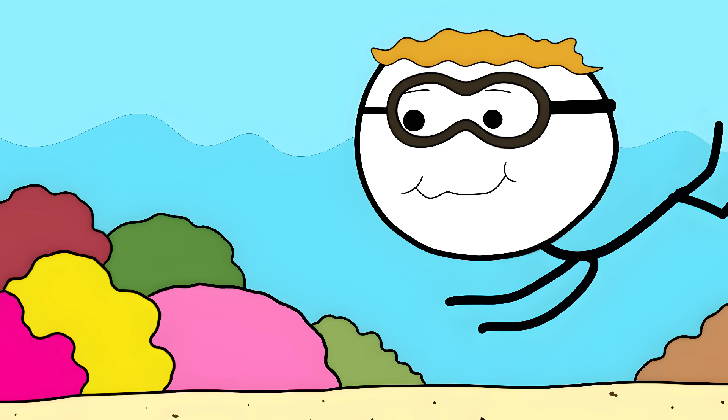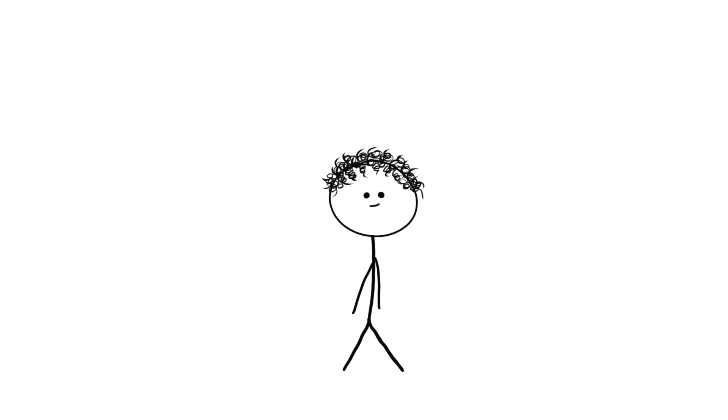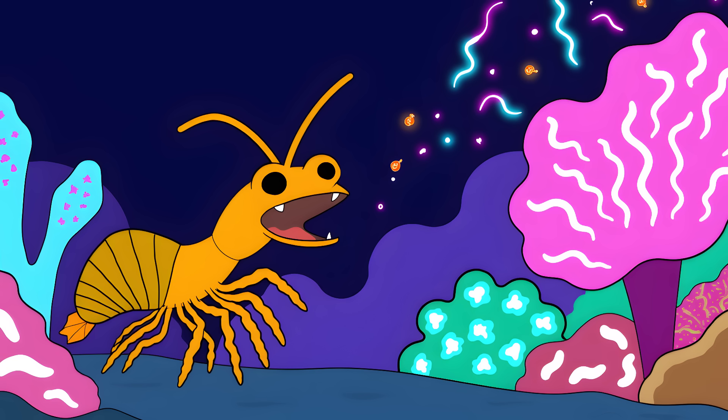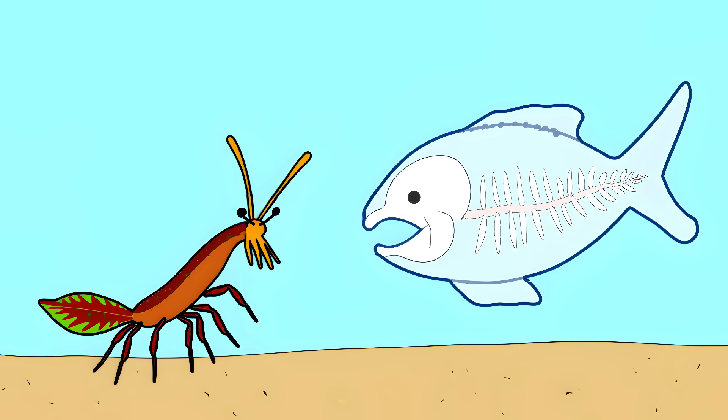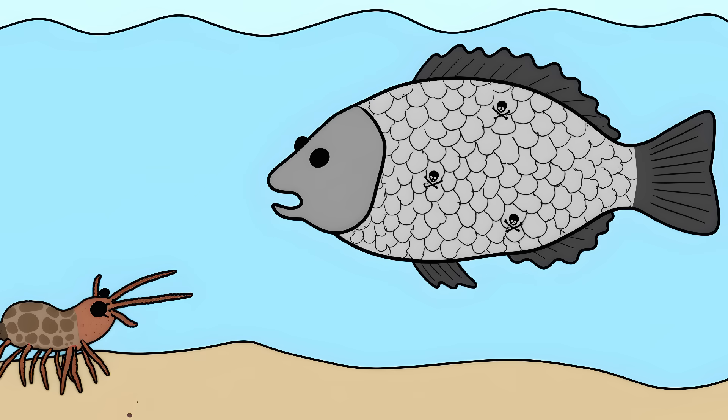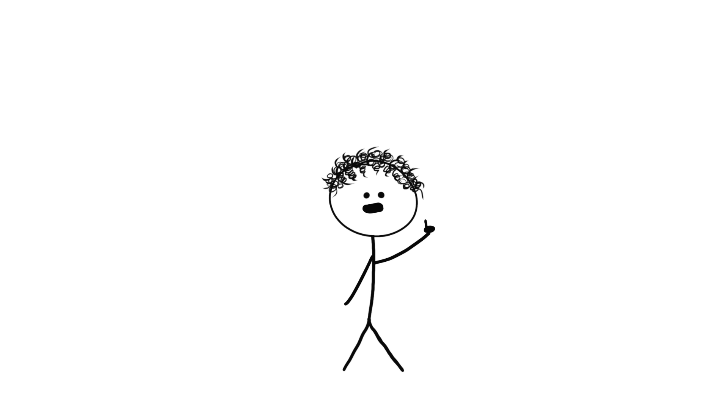When we look at a coral reef, we see some pretty colors. But when a mantis shrimp looks at the same reef, it's seeing a mind-bending light show that would make Avatar look like it was filmed in black and white. These little guys can also see something called polarized light. It's like having x-ray vision underwater. Every fish scale sparkles with hidden messages. Every wave of light carries secret information about what's around them.